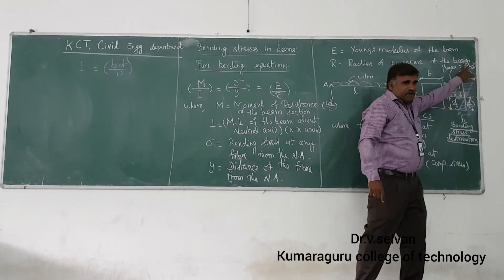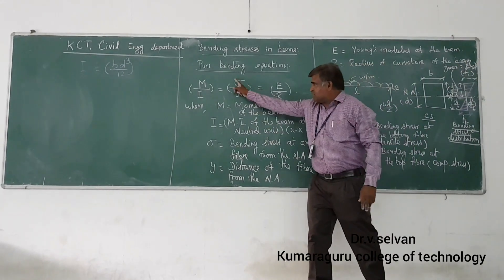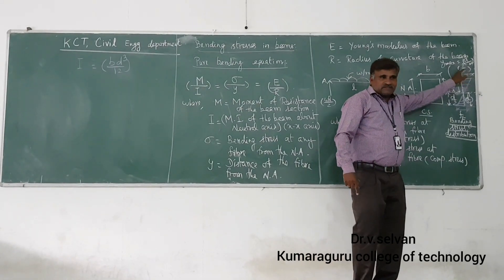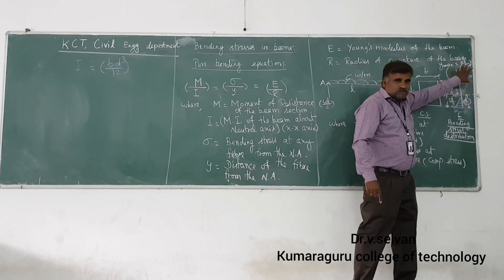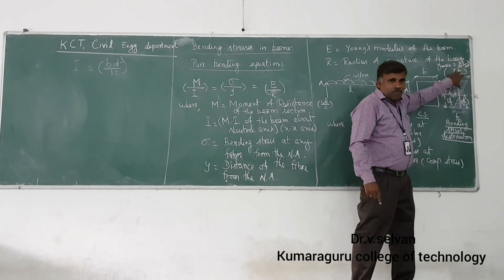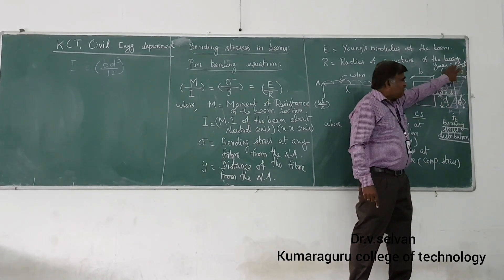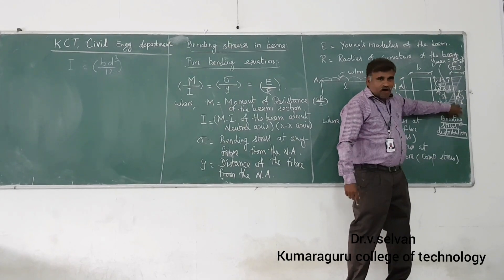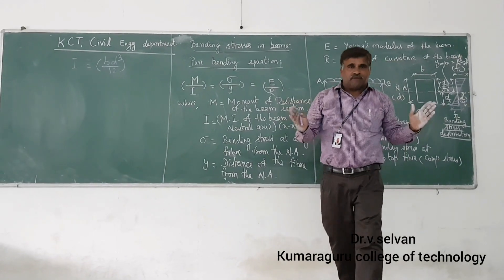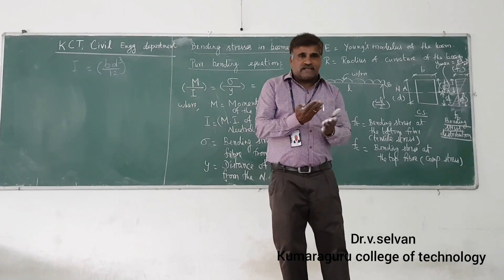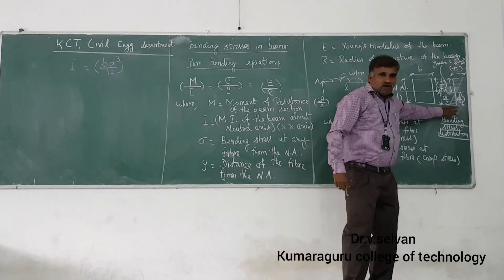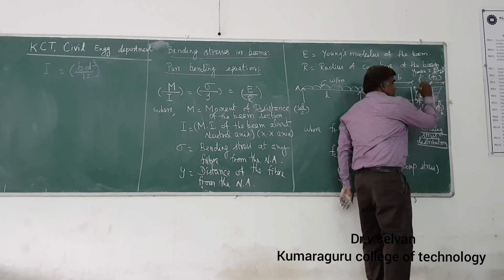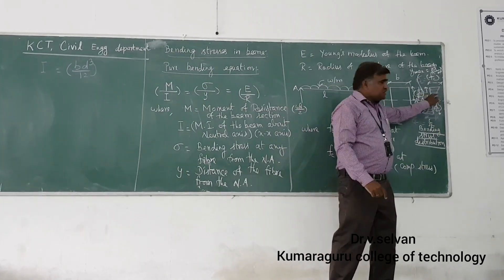Now coming to the bending stress, which I call σc or fc for compressive, and σt or ft for tensile. The maximum bending stress in a section will be taken at the outermost top and bottom fibers. At the top fiber I take it as σc or fc, and at the bottom fiber I take it as σt or ft. In the case of a simply supported beam, you will get tensile stress at the bottom fiber.